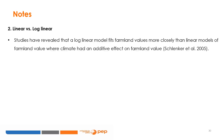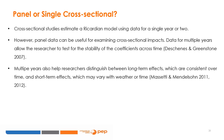We should also pay attention to the linear versus log-linear models. Studies have revealed that a log-linear model fits farmland values more closely than linear models of farmland value where the climate had an additive effect on farmland value (Schlenker et al., 2005). Cross-sectional studies estimate a Ricardian model using data for a single year or two. However, panel data can be useful for examining cross-sectional impacts. Data for multiple years allows the researcher to test for the stability of the coefficients across time, and also helps researchers distinguish between long-term effects, which are consistent over time, and short-term effects, which may vary with weather or time.